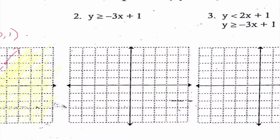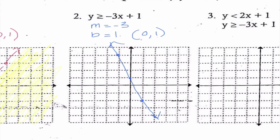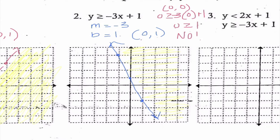Number 2 is once again in slope-intercept form. This time my slope is negative 3 and my y-intercept is 1, which means (0, 1). I'm going to go down 1, 2, 3 and over 1, or up 3 to the left 1. This time my line is solid because it says equal to. I'm going to plug in (0, 0): I get 0 is greater than or equal to negative 3 times 0 plus 1. Is 0 greater than or equal to 1? No. So I shade everything on the opposite side.